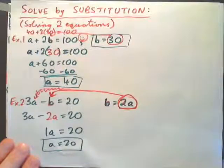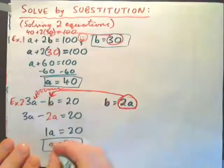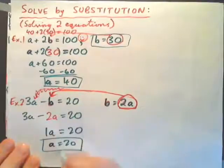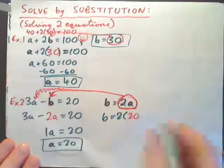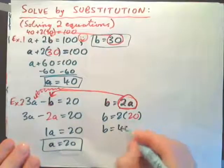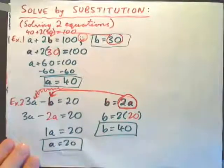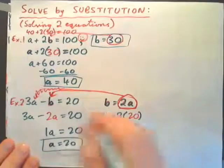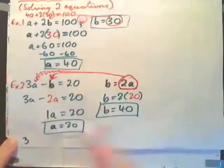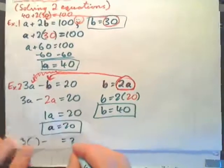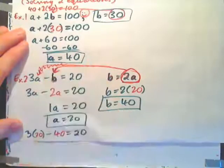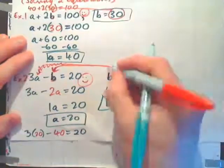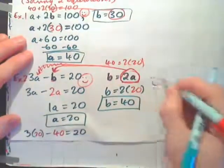Are we done? No, because we have two equations and two unknowns, a and b. We need to find both. We found a, so now we need to find b. The simplest thing is to plug 20 into b equals 2a: b equals 2 times 20, so b equals 40. Apple is 20 cents, banana is 40 cents. We can verify: 3 times 20 minus 40 equals 60 minus 40 equals 20. Both equations are true.